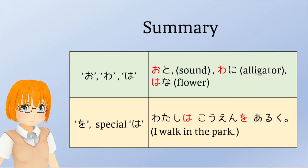In summary, usual お, わ, and は are used in words. On the other hand, special お and special は appear only in sentences and they mark the end of phrases. Especially, special は has its pronunciation altered to wa.